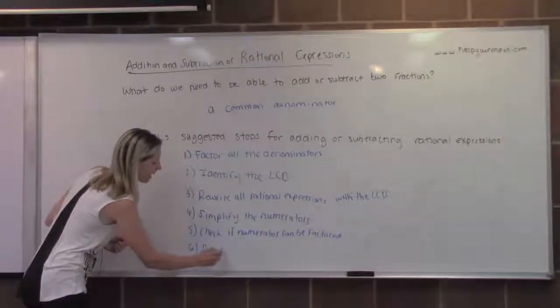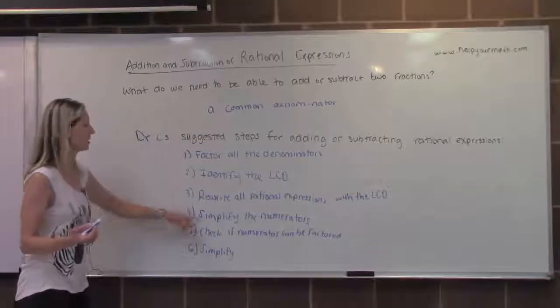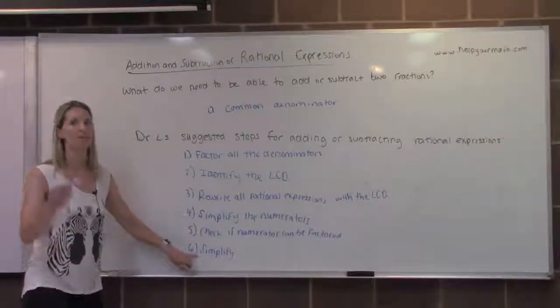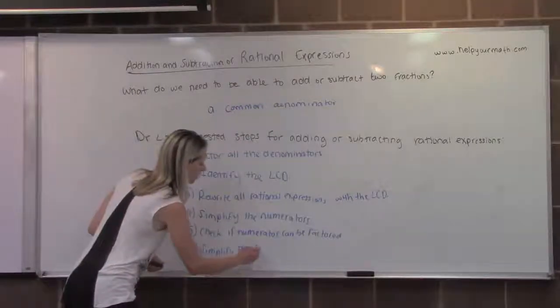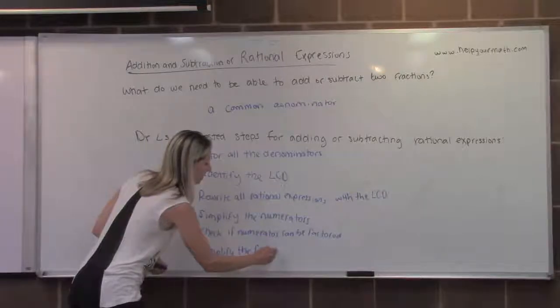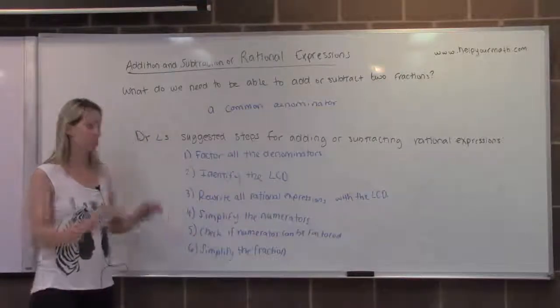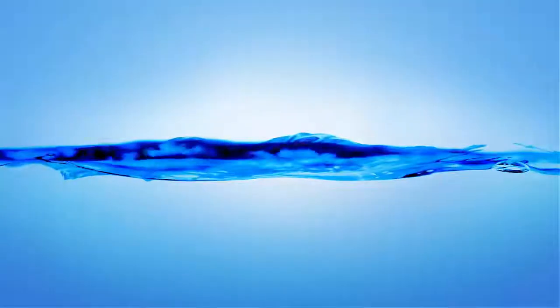Simplify the fraction because I'm using that word simplify a lot and I get that it can be confusing. Here I'm talking about distributing and combining my terms. Here I'm talking about simplifying the fraction. So look for do the numerator and the denominator have any common factors? And if they do, factor those out. If they don't, then you can just end at step five.